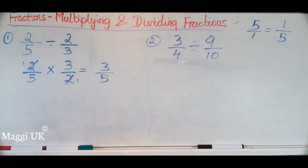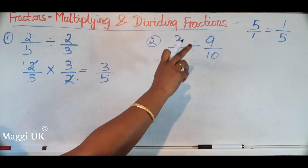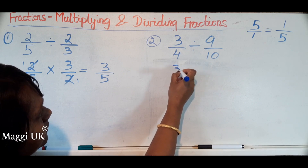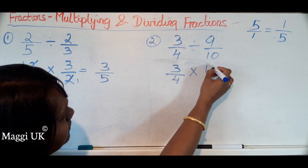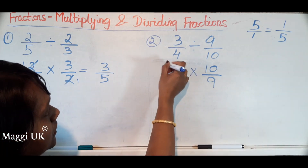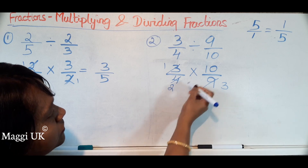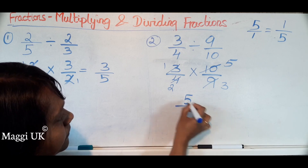Robert, can you answer this? Because we have a division sign here, what do we do first? Find the reciprocal of the second fraction. The reciprocal of 9 over 10 becomes 10 over 9, and change the division sign to multiplication. Then cross-multiply: 3 and 9 become 1 and 3; divide both 10 and 4 by 2, giving 5 and 2. Now multiply: 1 times 5 is 5, and 2 times 3 is 6. So the answer is 5 over 6. Well done, Robert!